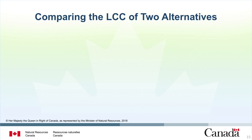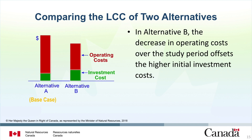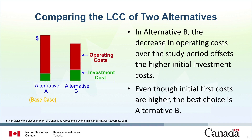Now let's look at the lifecycle costs of two alternative options, A and B. Alternative A represents the status quo based on current equipment and efficiency levels — this is the base case. Alternative A has lower investment costs and higher operating costs over the study period. Alternative B is an option to invest in more efficient equipment and decrease operating and energy costs. Alternative B carries additional upfront investment costs because the equipment has higher energy efficiency. However, the decrease in operating costs over the study period more than offsets the increase in initial investment costs. Therefore, overall lifecycle costs are actually reduced. Even though initial first costs are higher, the best choice is Alternative B.